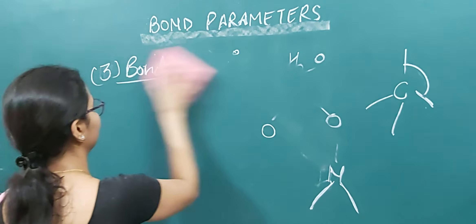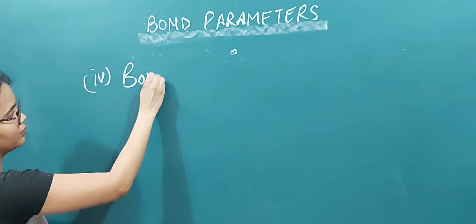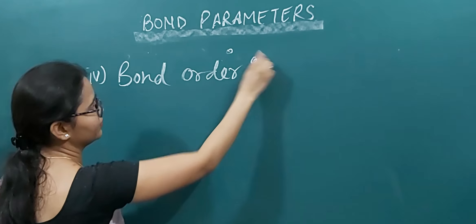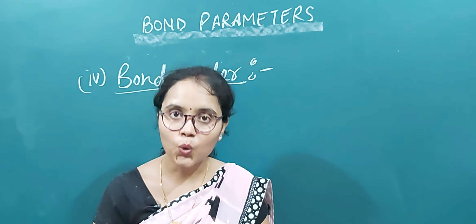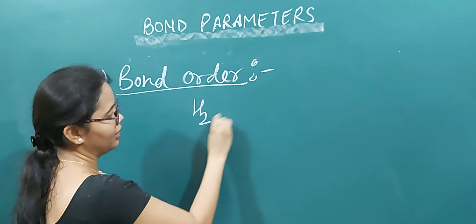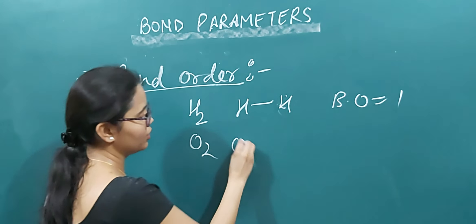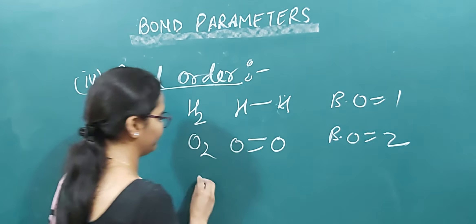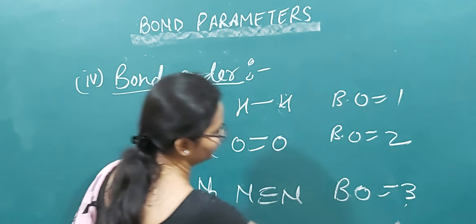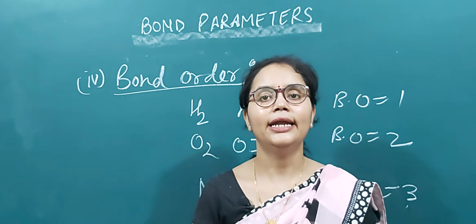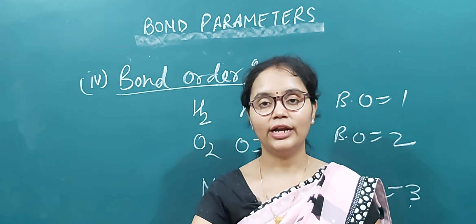The last parameter is bond order. Bond order is the number of bonds present between two atoms. For example, in H2 only one bond is present, so bond order is one. For O2 a double bond is present, so bond order is two. For nitrogen a triple bond is formed, so bond order is three. These are the four parameters by which a covalent bond is characterized.